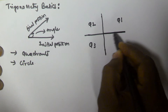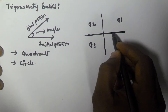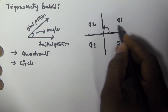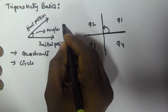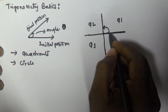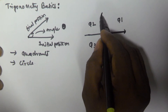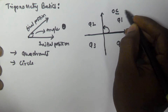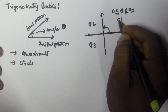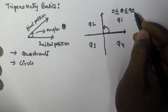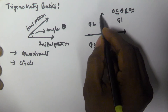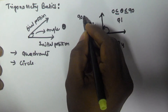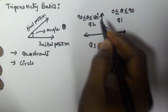If we assume this is the initial line and we trace the movement of this line, we represent this angle using the theta symbol. Whenever the line is moving from its initial position into the first quadrant, the angle theta is going to be between 0 to 90 degrees. If it is moving into the second quadrant, the angle is going to be between 90 to 180 degrees.